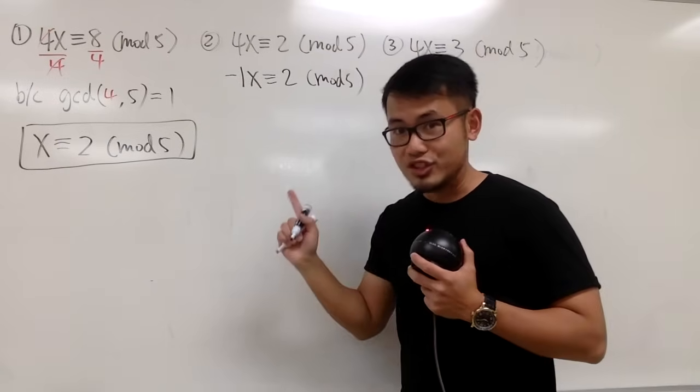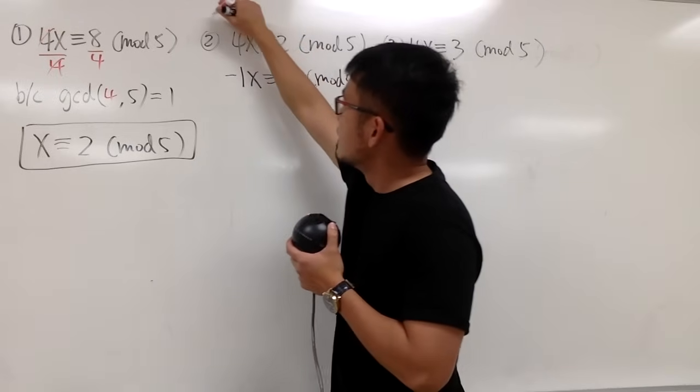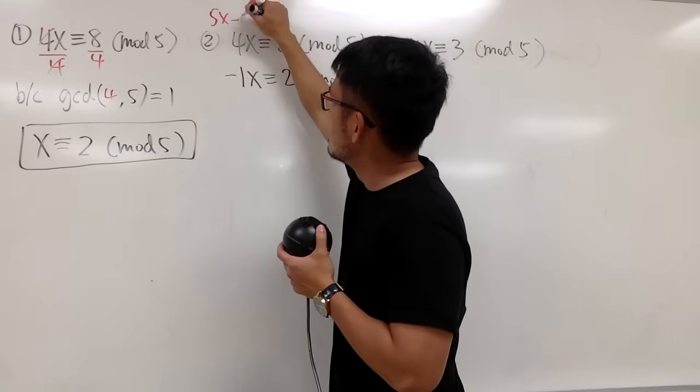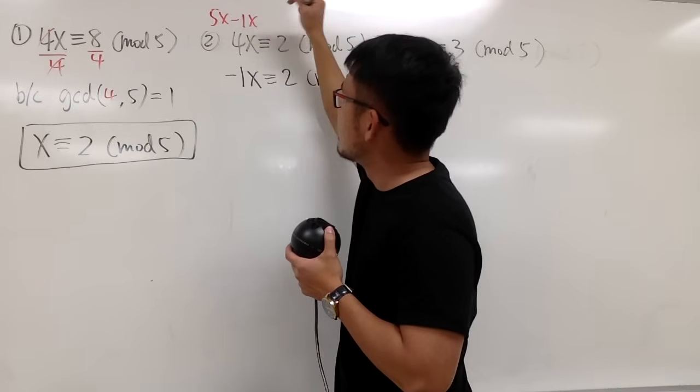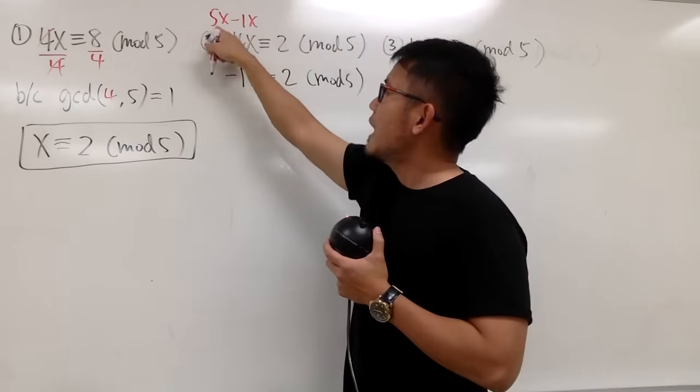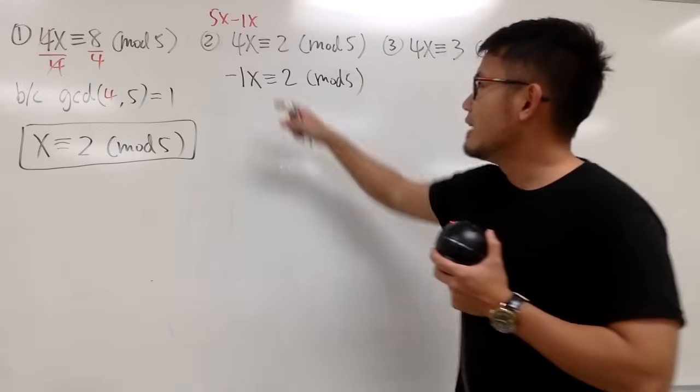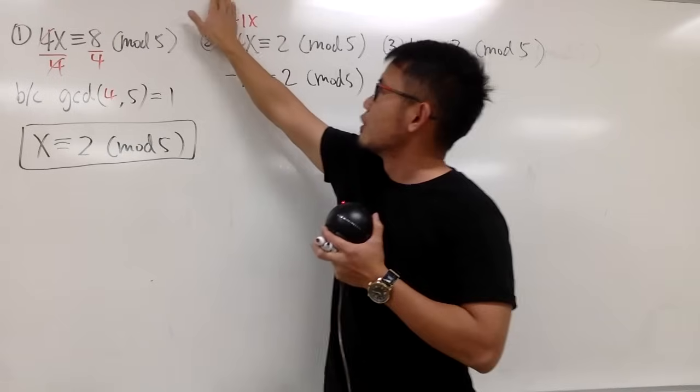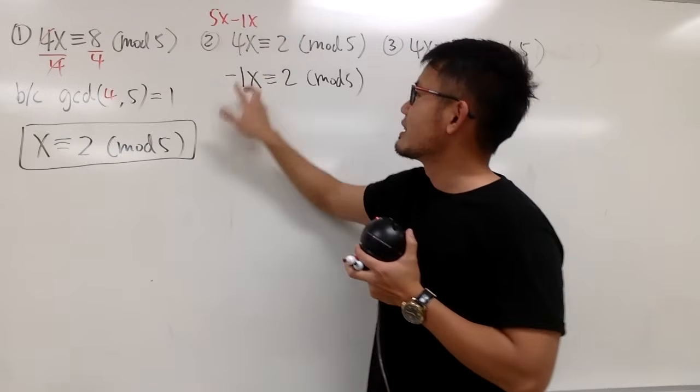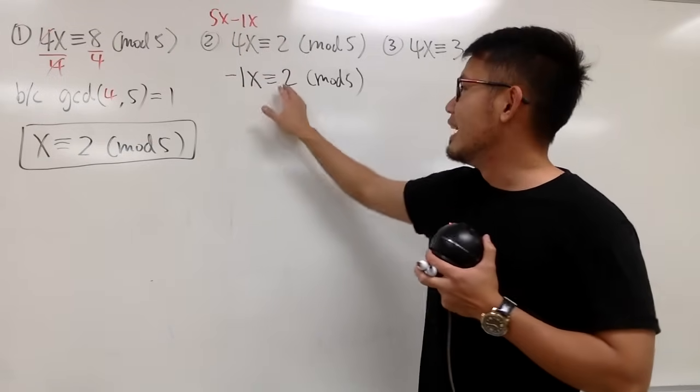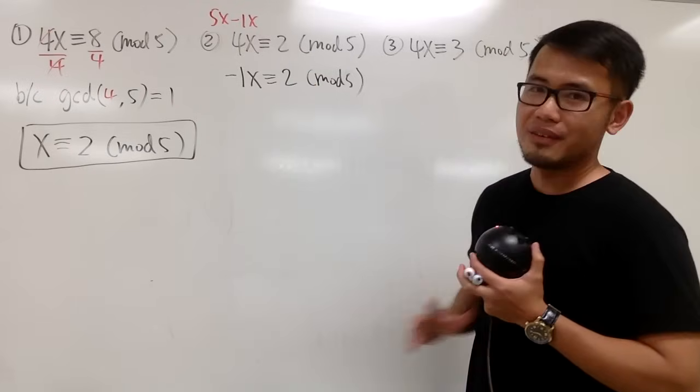This is legit because you can look at the 4x as 5x minus 1x, right? And you see, 5x, that's always going to be a multiple of 5. And in the mod 5 world, this right here is going to be 0. So you just get negative 1x. And this is congruent to 2 mod 5.